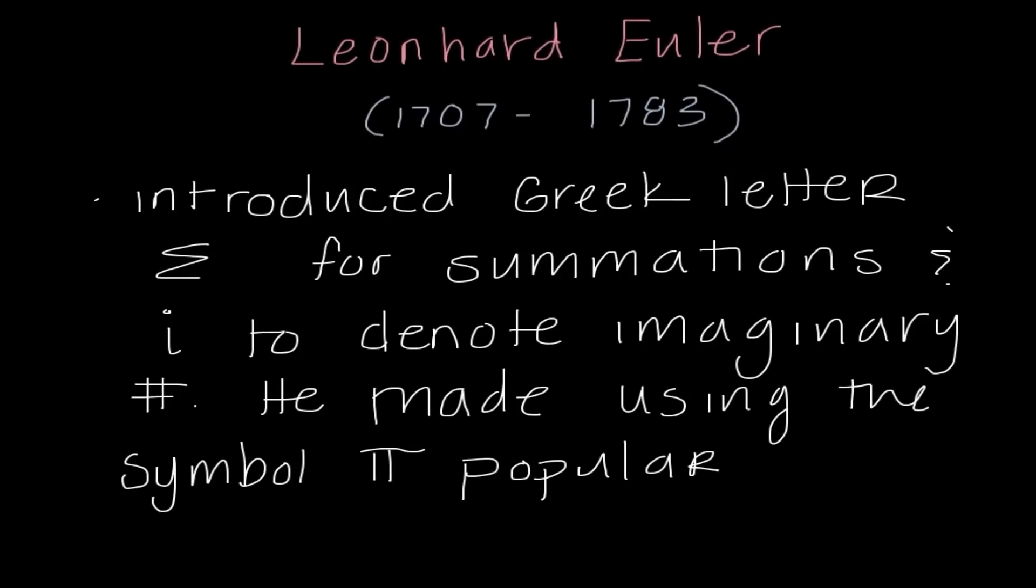Euler also introduced the Greek letter for summations. We use this epsilon quite frequently for summations. He also was the first one to use the letter i to denote imaginary numbers. And he made using the symbol pi popular.